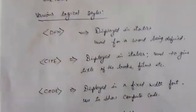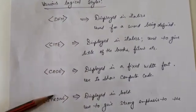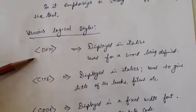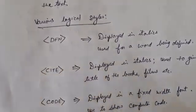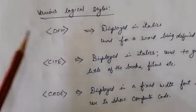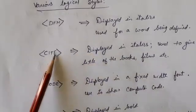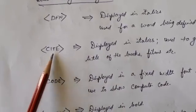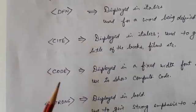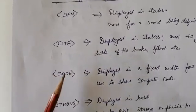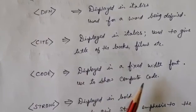There are other logical font styles as well. Each has a specific meaning, and according to that meaning they define the form of the text or contents — like <dfn> for definition, <cite> for citing a title of a book, film, or movie, and <code>, which displays text as programming language code in a fixed-width font to show computer code.